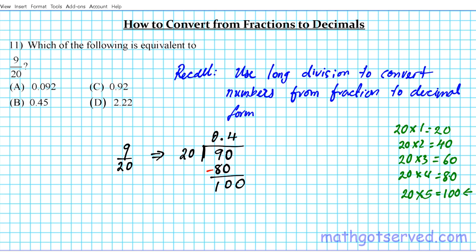So 20 goes into 100 five times. We have 5 here, and 5 times 20 is 100. If you subtract again - remember division is just repeated subtraction of factors - you have 0. That signals that we are done.